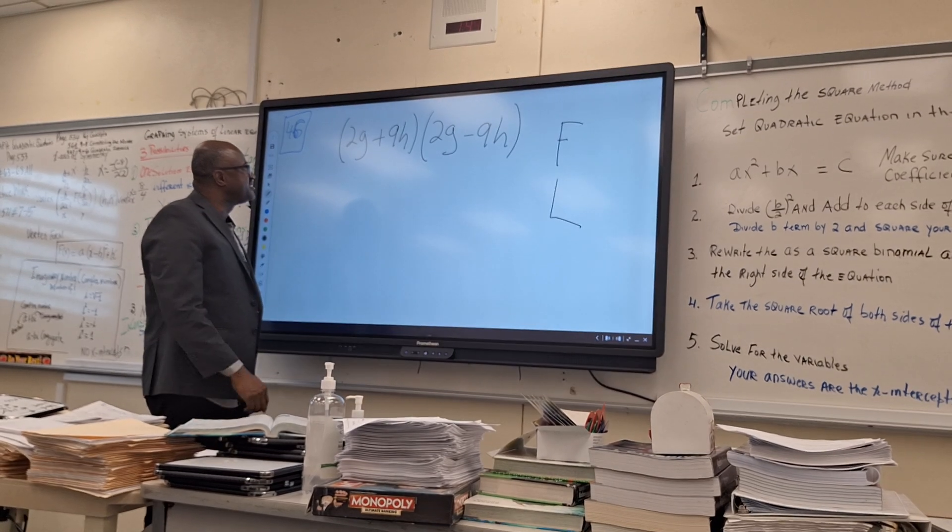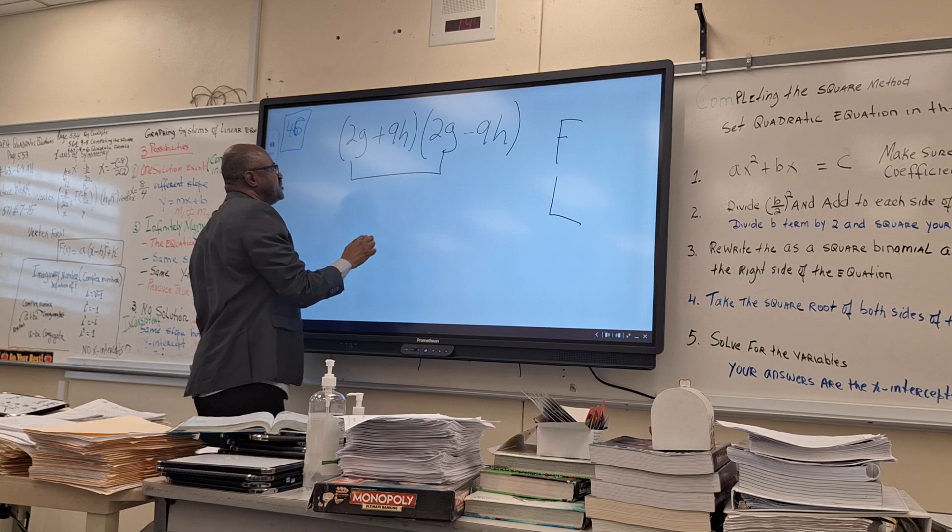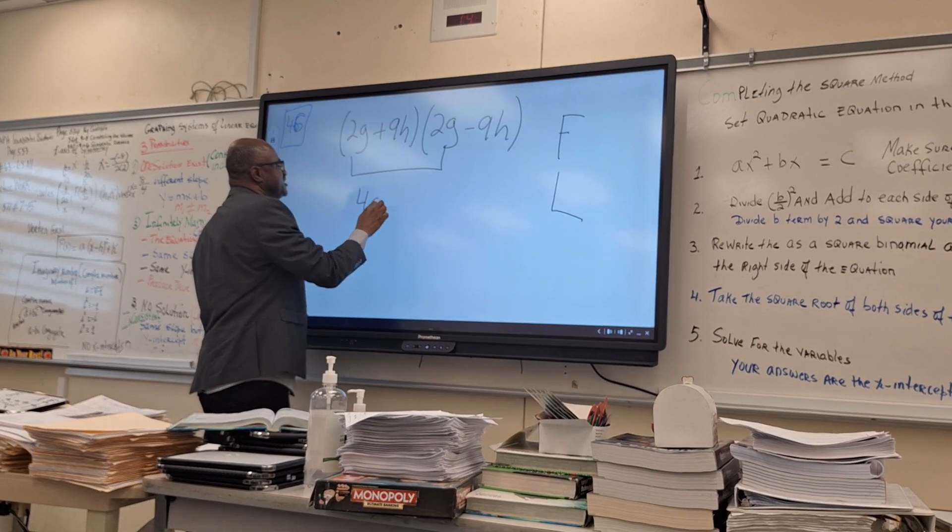In this case, what is your first? 2G. 2G times 2G will give you 4G squared.